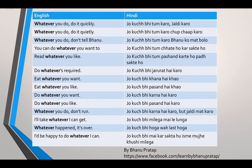'I will be happy to do whatever I can.' Jo kuch bhi main kar sakta hoon, is mein mujhe khushi milegi. 'Happy' means 'khushi'. 'Will' means future tense — 'rahunga/karunga'. 'Can' means 'sakna'. So: jo kuch bhi main kar sakta hoon, is mein mujhe khushi milegi.